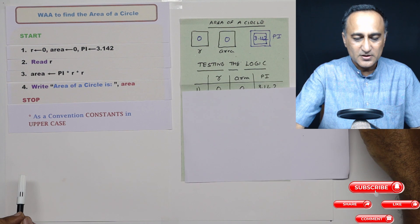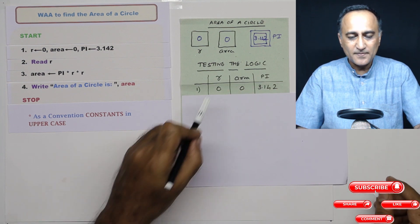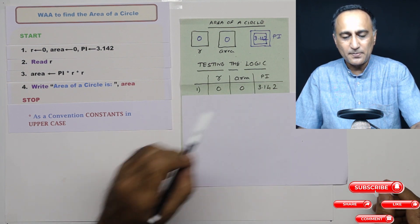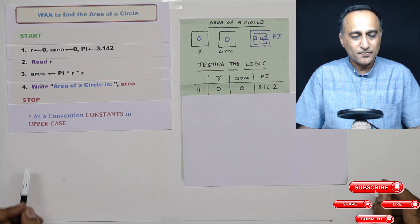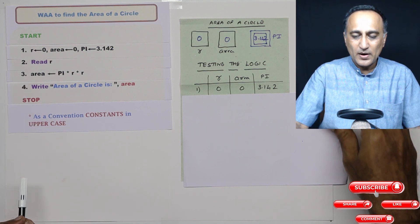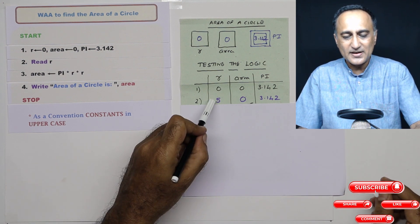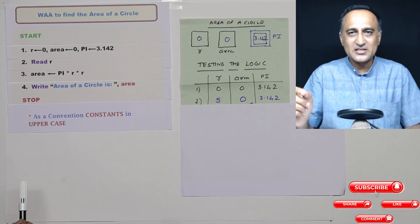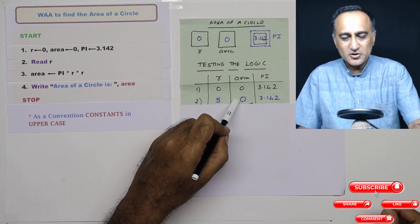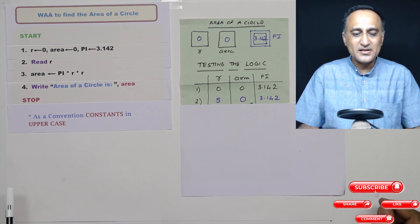So let's do a dry run of this. So in the first step, if you see, R is zero, area is zero, and pi is 3.142. Step number two, I am reading the value of radius. So in step number two, what is happening is the user, let's say from the keyboard, enters the radius as five. Area has not changed, the value of pi has also remained the same.